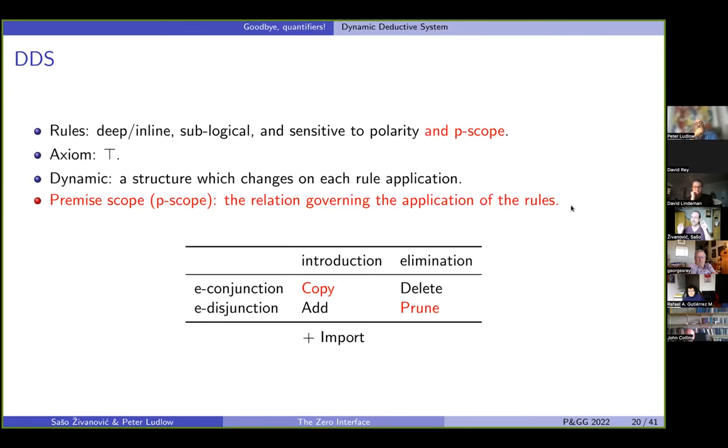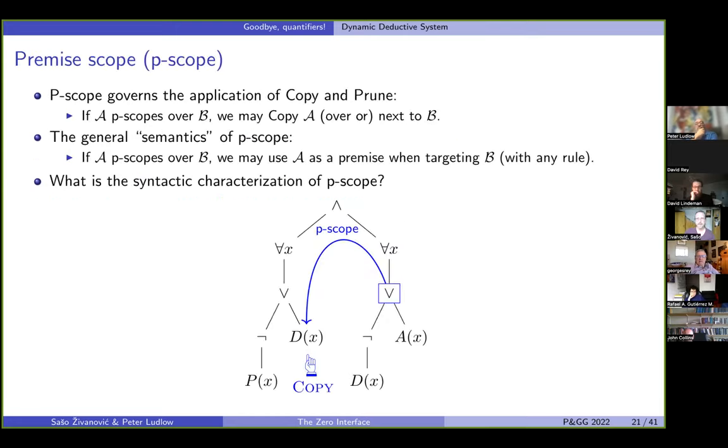Now, however, there is one little piece of the puzzle that I haven't told you yet. And it is called premise scope or pscope for short. And this pscope is a relation that governs the application of copy and prune. Namely, copy and prune are both rules which kind of, there is an interaction between a premise and a target site. And now it's not as if I can copy anything anywhere. There are, of course, limits to that. And we call these limits pscope. Basically, if something pscopes something else, I can copy it there. Or more in general, I can use it as a premise of a rule targeting the other thing. So premise scope is the scope of a constituent in the role of a premise.